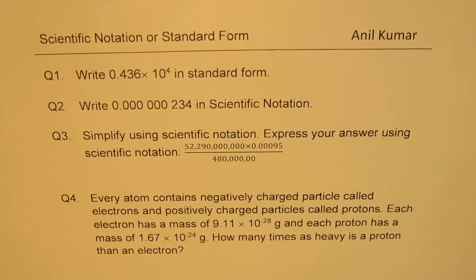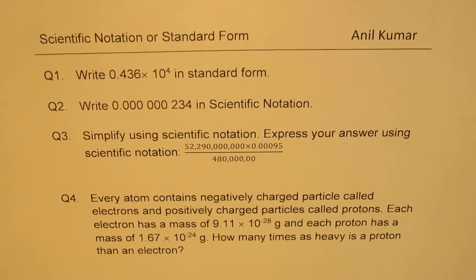Question number four: Every atom contains negatively charged particles called electrons and positively charged particles called protons. Each electron has a mass of 9.11 × 10⁻²⁸ grams, and each proton has a mass of 1.67 × 10⁻²⁴ grams. How many times as heavy is a proton than an electron?